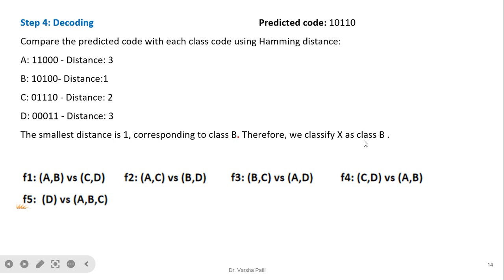Class C has two mismatches (distance = 2) and class D has three mismatches (distance = 3). The smallest Hamming distance is 1, corresponding to class B. Therefore, we classify the unseen sample x as class B. This is further confirmed by observing that out of five classifiers, four indicate class B, giving strong evidence for this prediction.